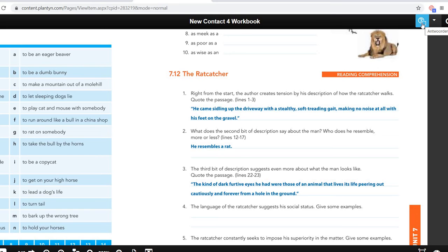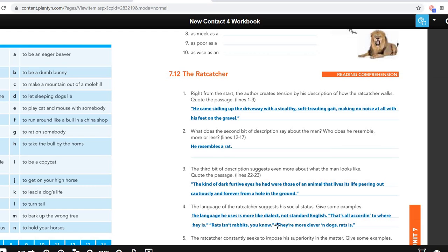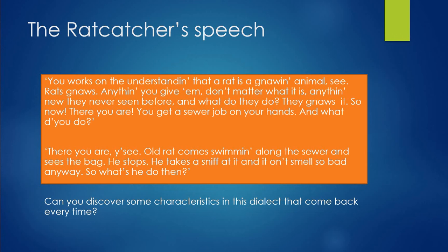Then the language of the rat catcher is quite important as well — it suggests his social status. He uses dialect, not standard English. For example: 'You works on the understanding that rat is a gnawing animal. See, rats gnaws anything you give them, don't matter what it is, anything new they never seen before — they gnaws it. So now there you are, you get a sewer job on your hands and what you do?' Another good example: 'All rat comes swimming along the sewer and sees the bag, he stops, he takes a sniff at it and it don't smell so bad anyway. So what's he do then?'